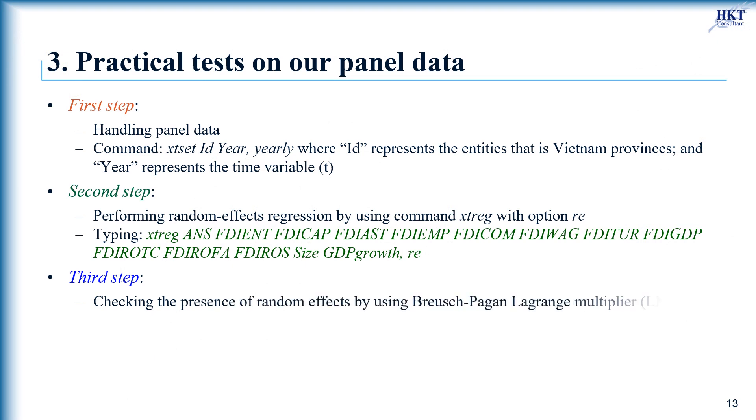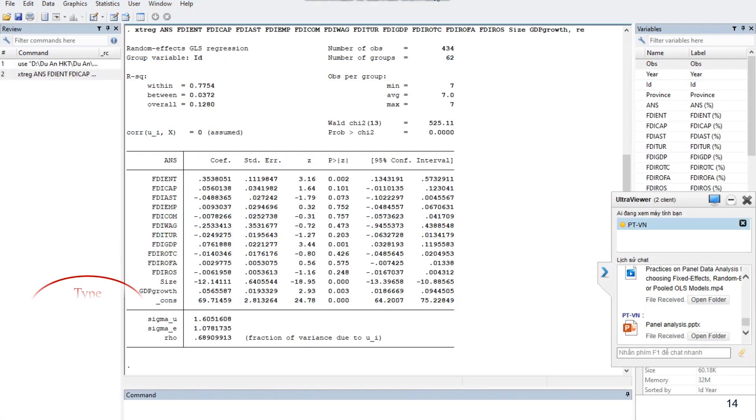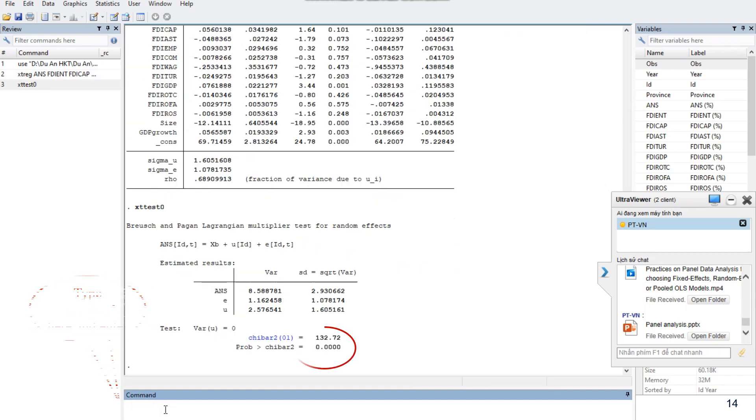In the third step it is necessary to test the presence of random effects by using Breusch-Pagan Lagrange multiplier. The null hypothesis in the LM test is that variances across entities is zero, this is no significant difference across units. Type here the xttest0 then enter. We can see that the result of this test is significant by indicating random effects.